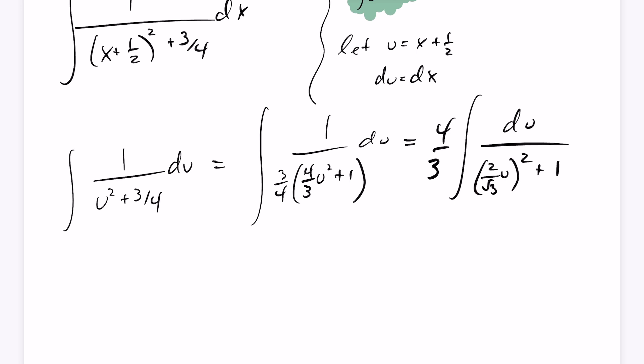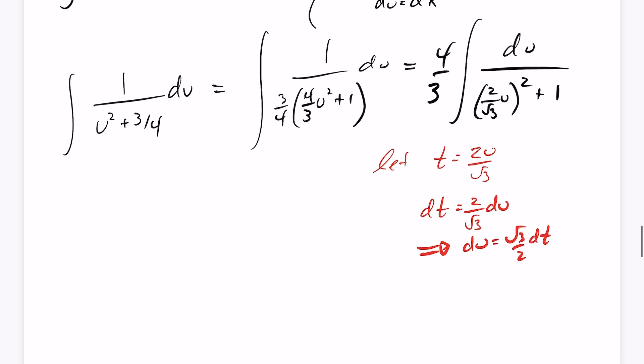I'm going to go ahead and just do another substitution to make this a little more clear. Here, I'm going to let t be equal to 2u over the root of 3, in which case dt is going to equal 2 over the root of 3 du, which will imply that du is root 3 over 2 dt. So now this is going to equal the 4 thirds from before, integral, get rid of that du and replace it with a root 3 over 2 dt, divided by t squared plus 1.